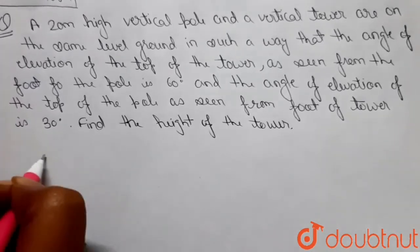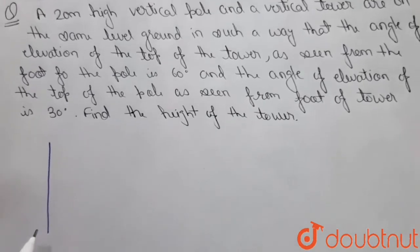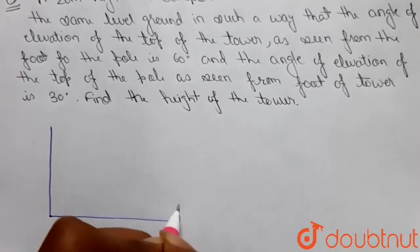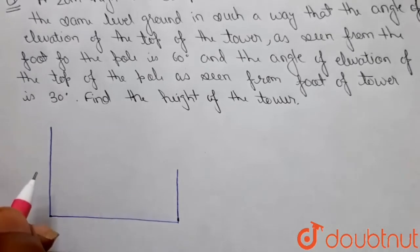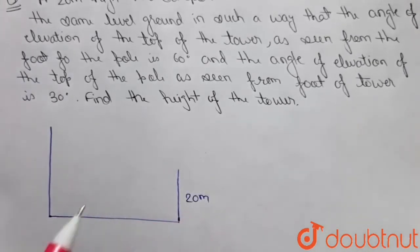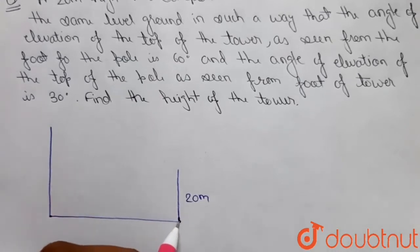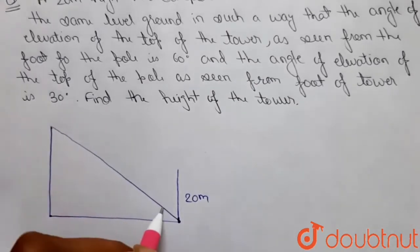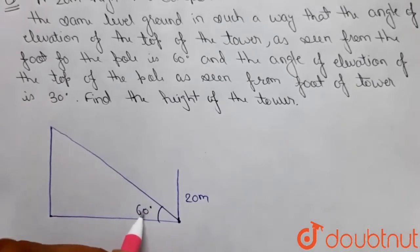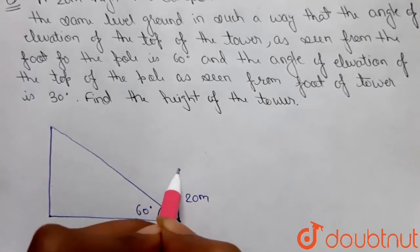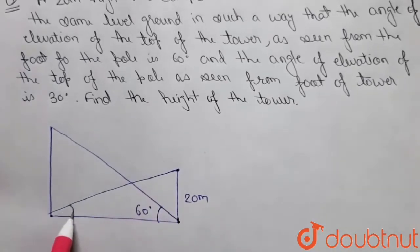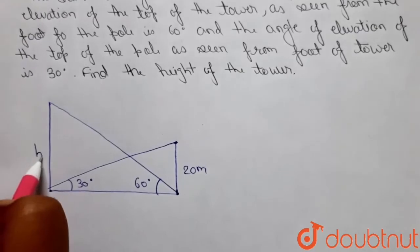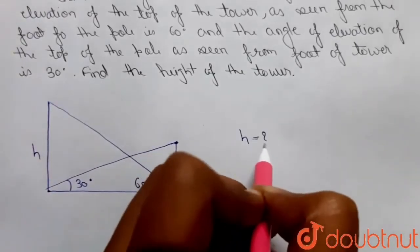Let me first draw the diagram. We have a tower and a pole, and they are on the same level ground. The height of the pole is given as 20 meters. From the foot of the pole, the angle of elevation to the tower is 60 degrees, and from the foot of the tower, the angle of elevation to the pole is 30 degrees. Let the height of the tower be h.